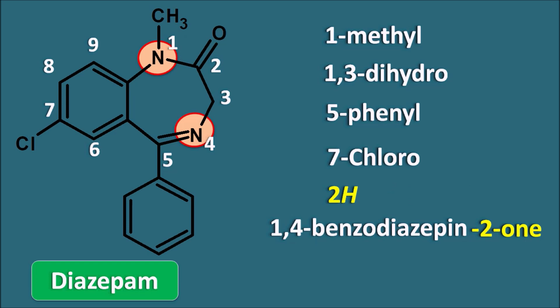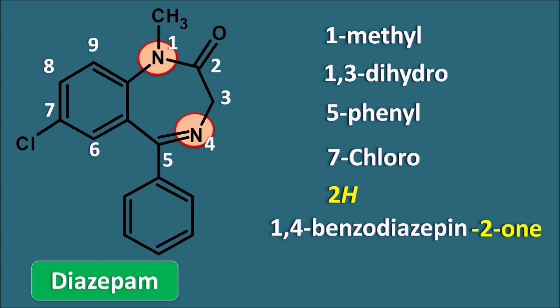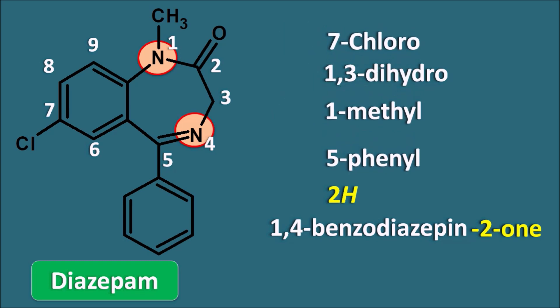Arranging alphabetically: 7-chloro (C) first, then 1,3-dihydro (D), then 1-methyl (M), then 5-phenyl (P). The full IUPAC name of diazepam is: 7-chloro-1,3-dihydro-1-methyl-5-phenyl-2H-1,4-benzodiazepine-2-one.